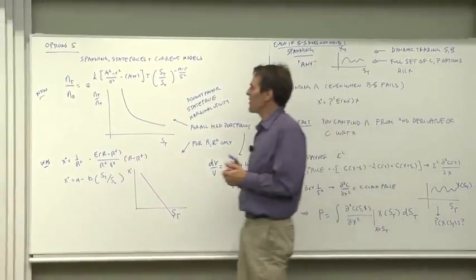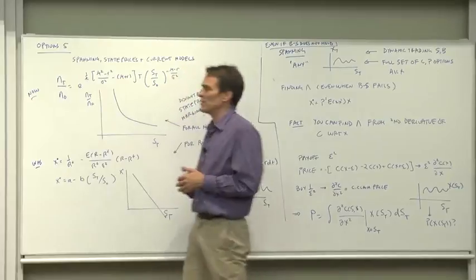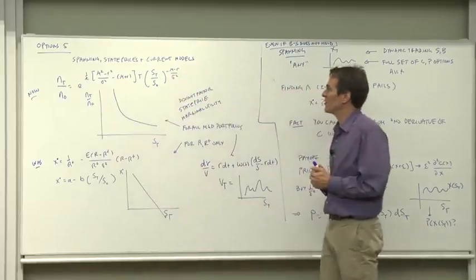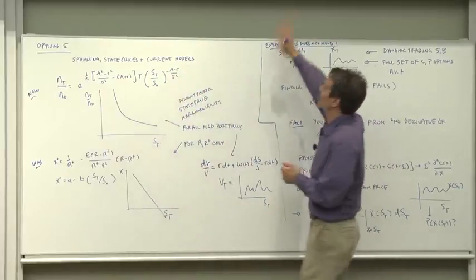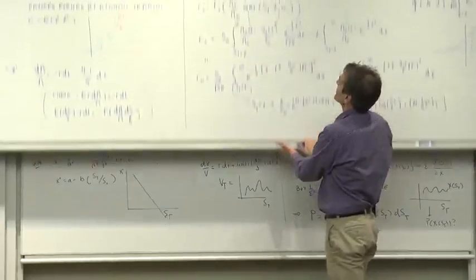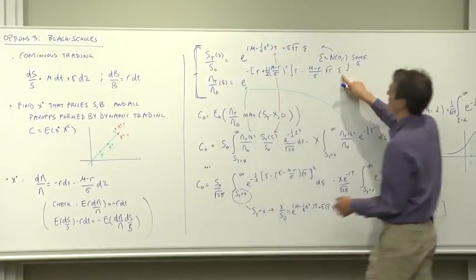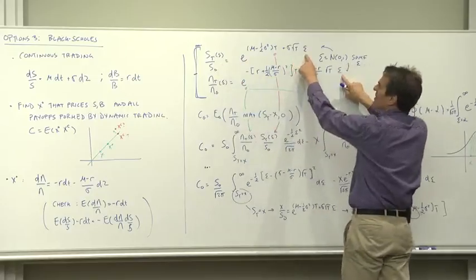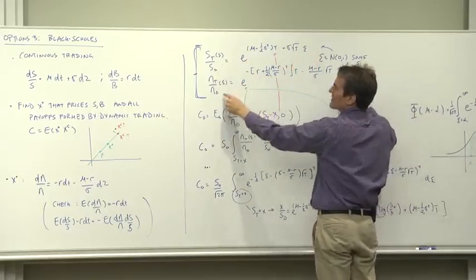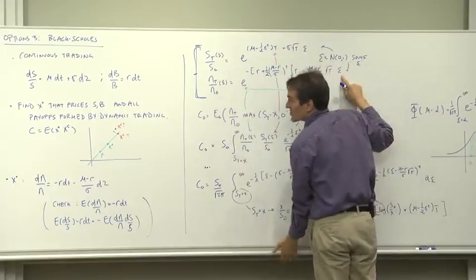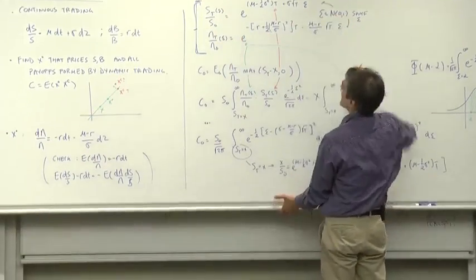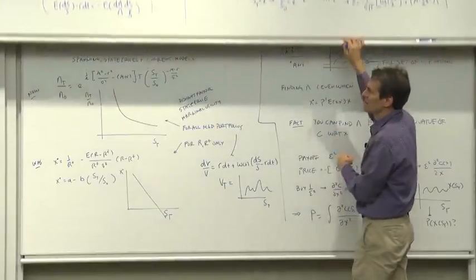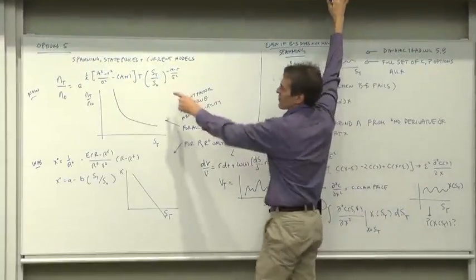As one interesting way to start looking at this, let's look at our friend the discount factor, which is something we've studied for a long time. We had a formula for the discount factor in terms of a shock epsilon, and we had a formula for the stock price in terms of a shock epsilon. Let's substitute out the epsilon and write the discount factor in terms of the stock price. So that's just eliminating epsilon from those two equations, and the result is this equation here.